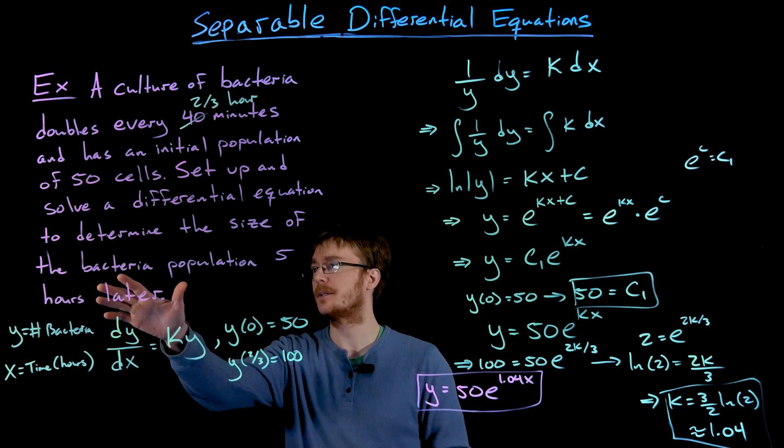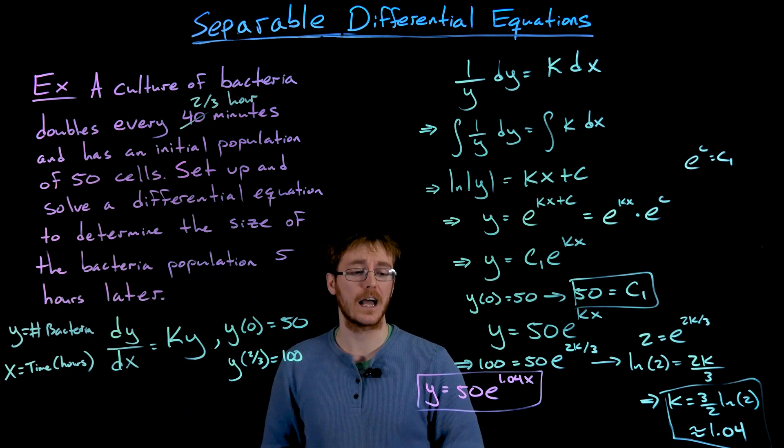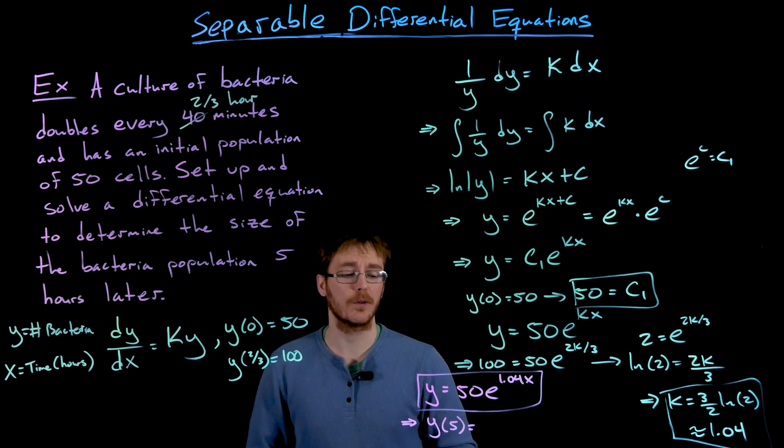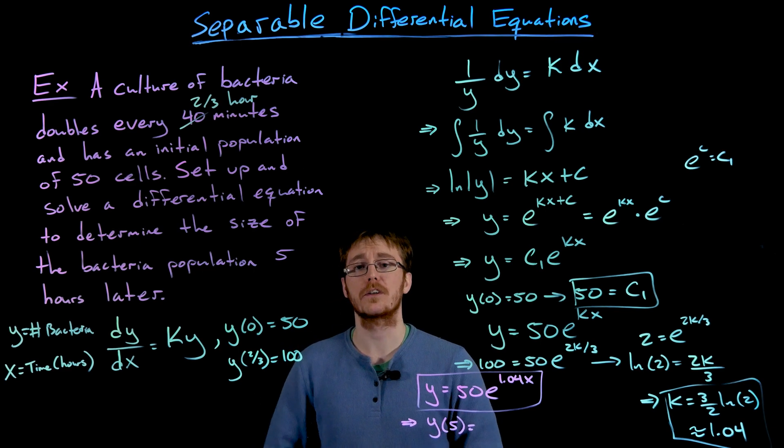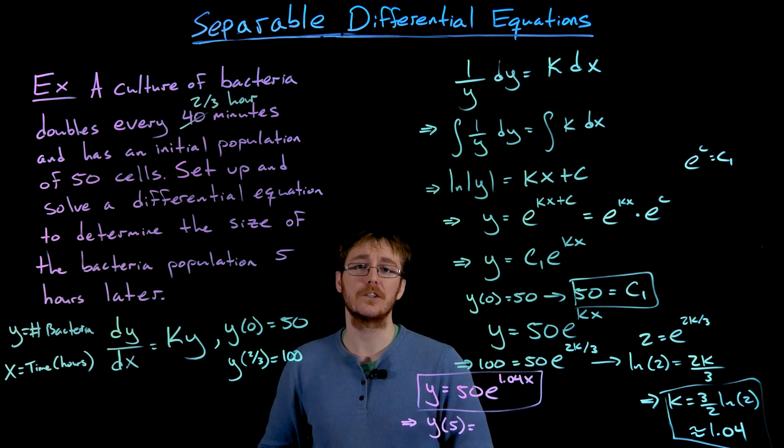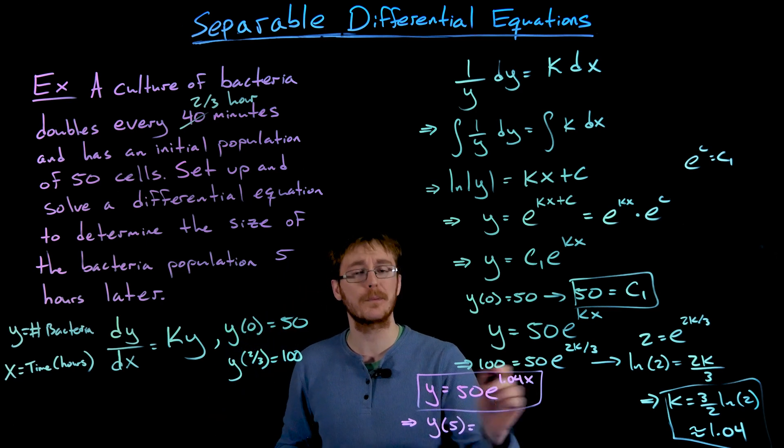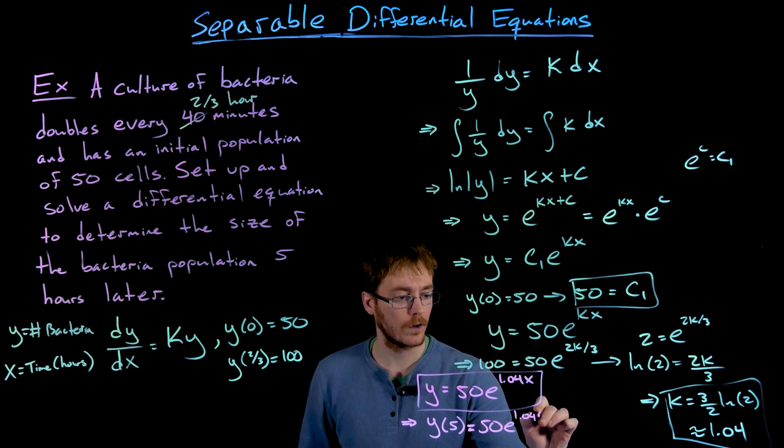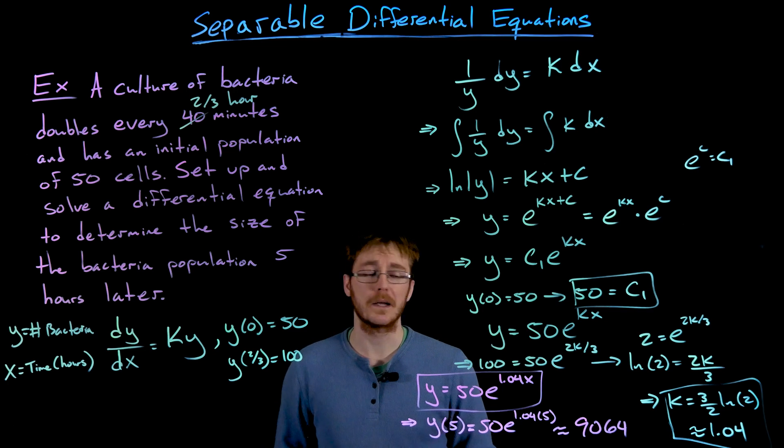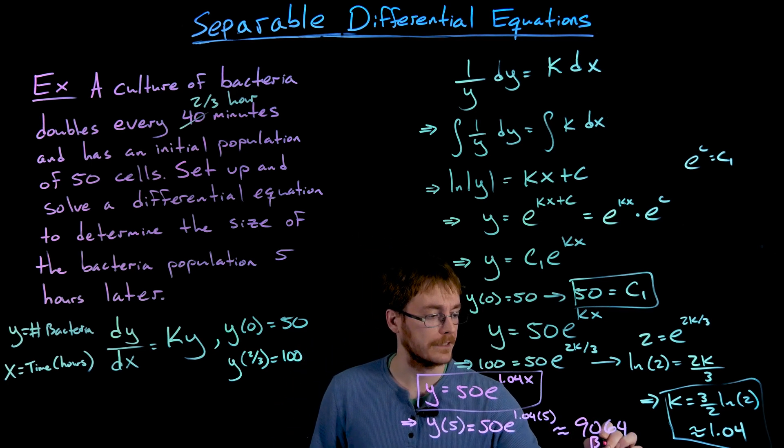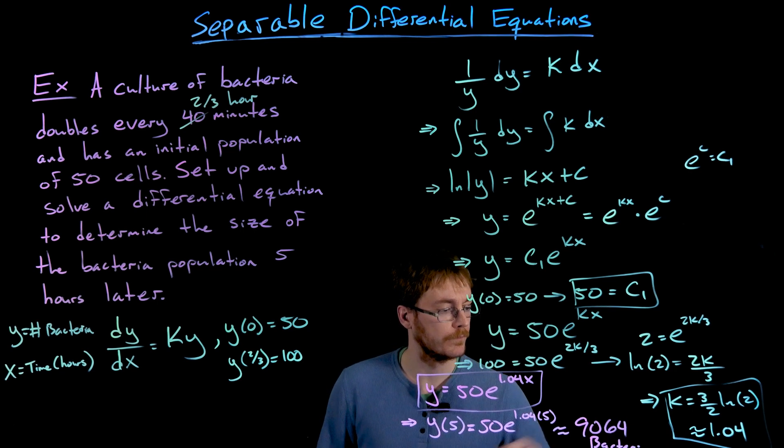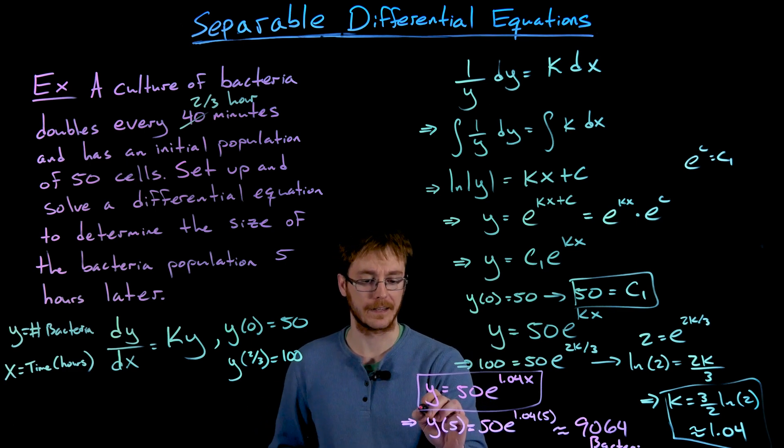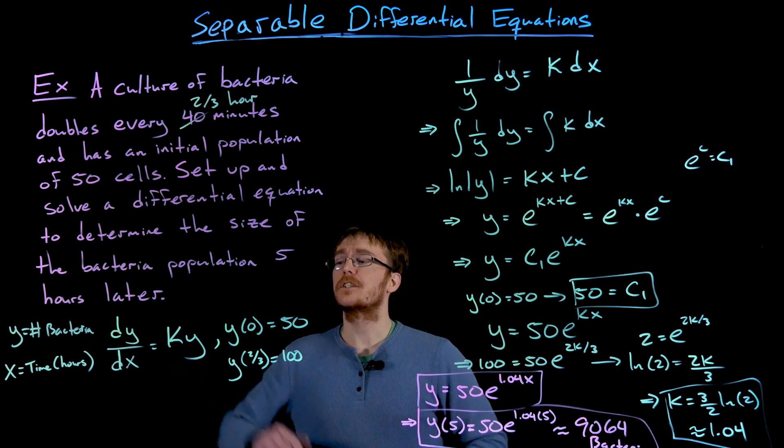But don't forget the problem was asking us to determine the size of the bacteria population 5 hours later. So now to finish this example off, we just have to evaluate our model at time x equals 5 hours. Remember x, we've decided to be in units of hours here. If we did it in minutes, those numbers would change a little bit slightly up in that exponent. So we end up with 50 times e to the power of 1.04 times 5. And according to my notes, that's going to be about 9,064 bacteria. We just rounded to the nearest bacteria here because it doesn't really make sense to have half a bacteria or anything like that.